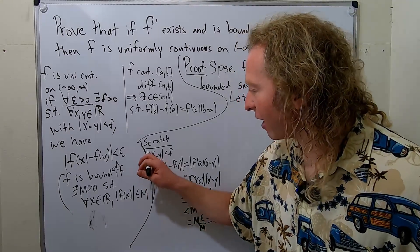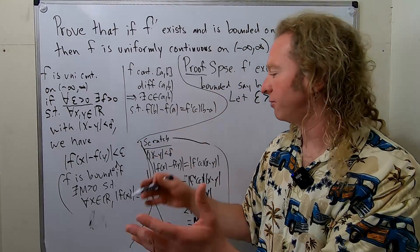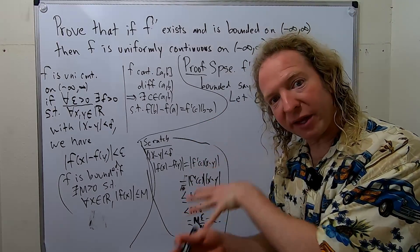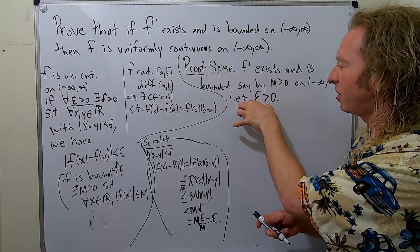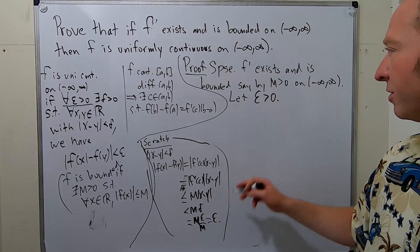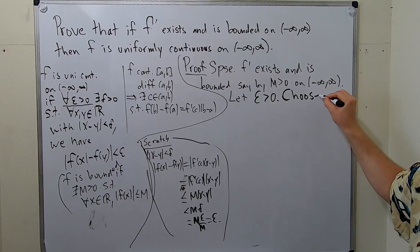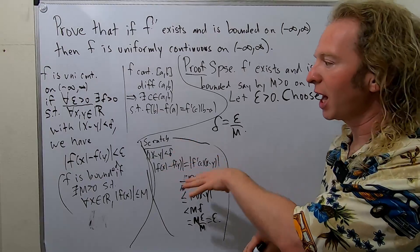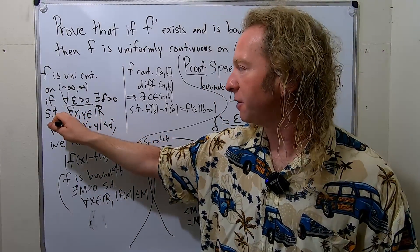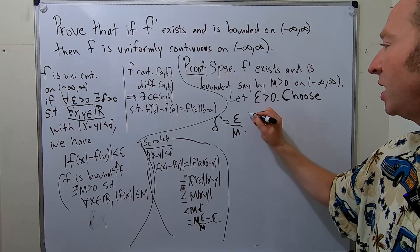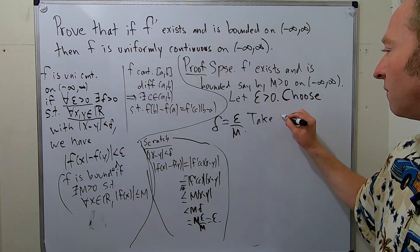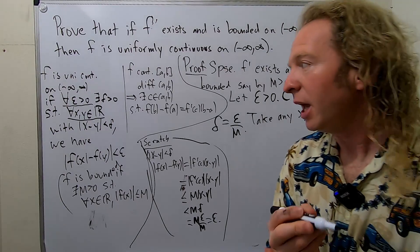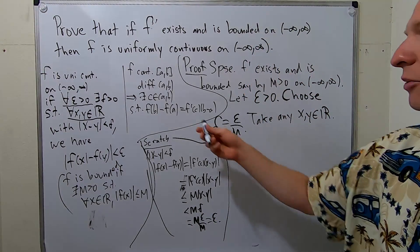So back to our proof: choose delta equals epsilon over m. Now we need to apply the mean value theorem carefully. So take any x, y in the set of real numbers.